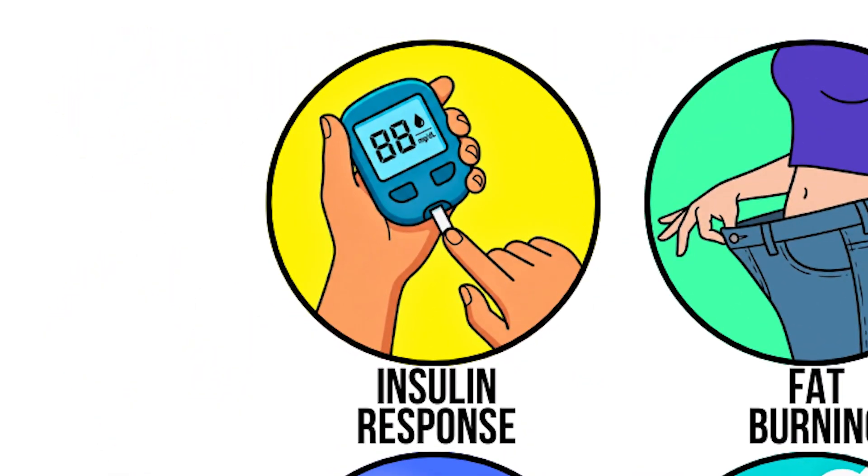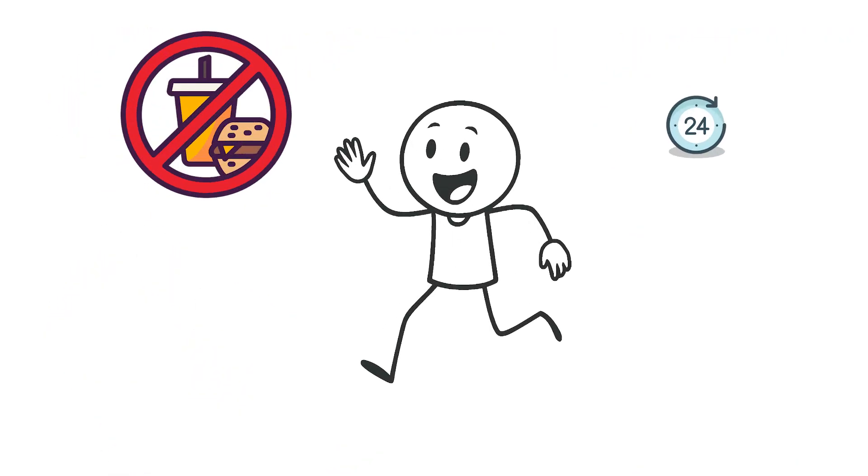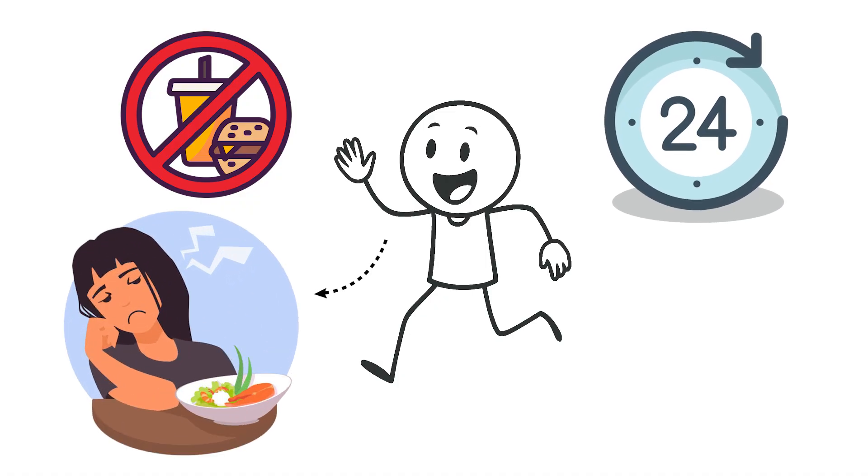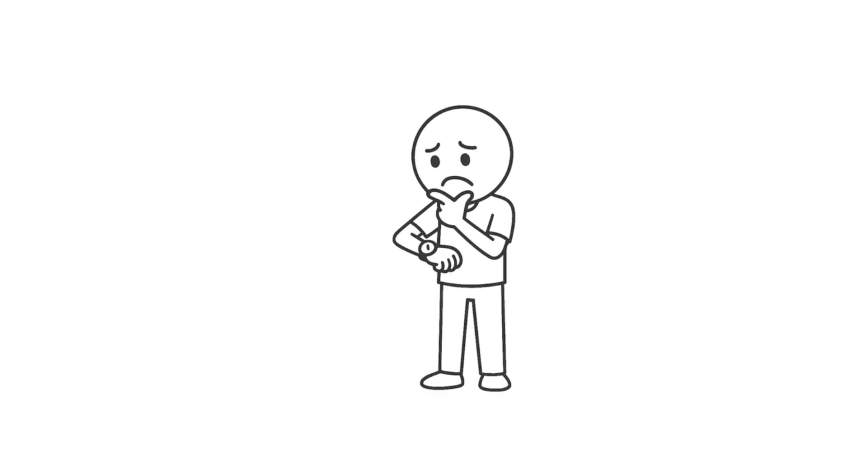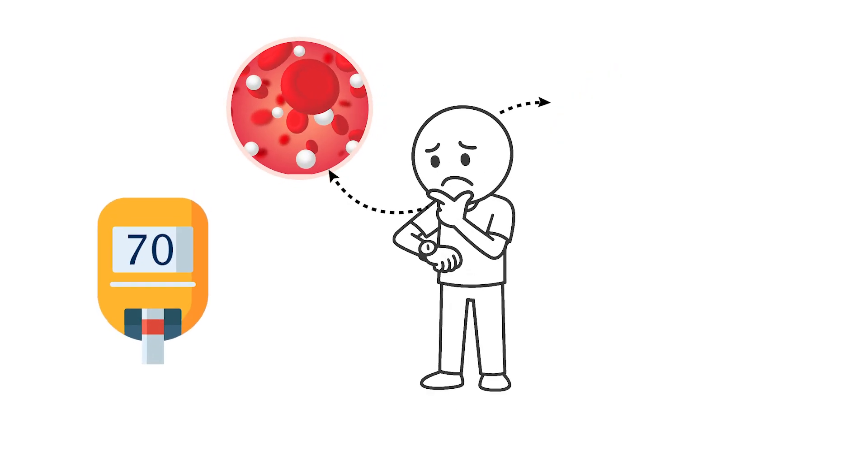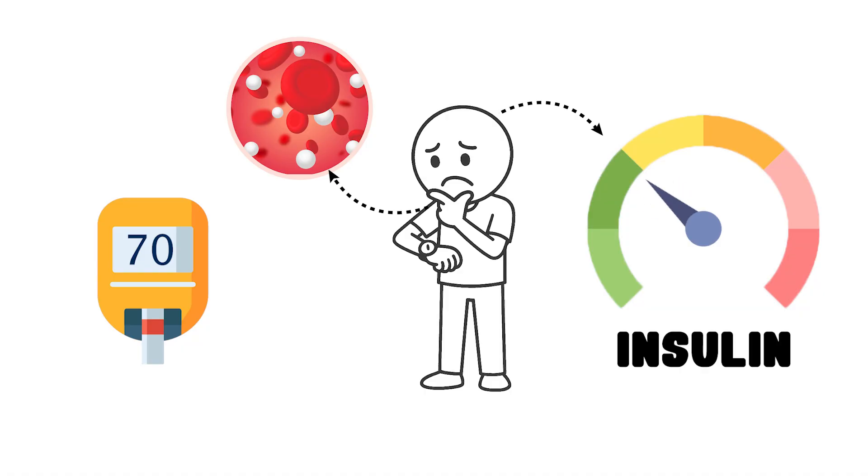Blood sugar and insulin regulation. Have you ever gone without eating for 24 hours and noticed you're not even hungry anymore? That feeling is one of the unexpected changes that happens when you fast for a full day. At this point, your blood sugar has leveled out at a steady baseline, and your insulin has dropped into its fasting pattern.